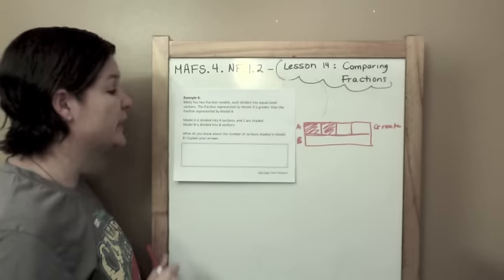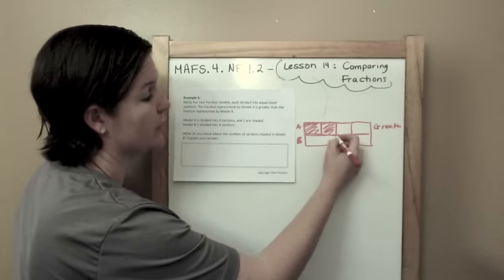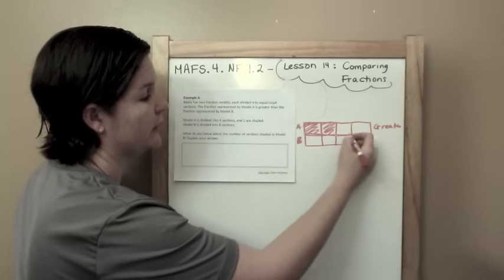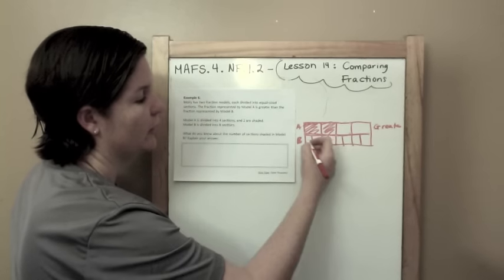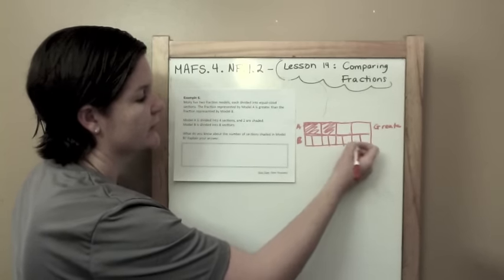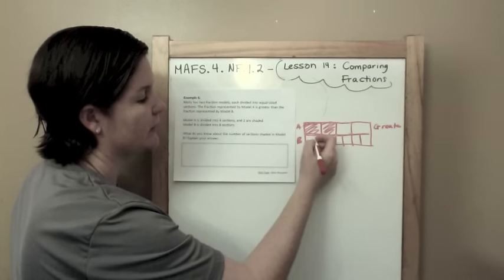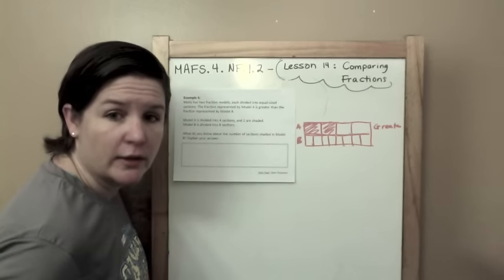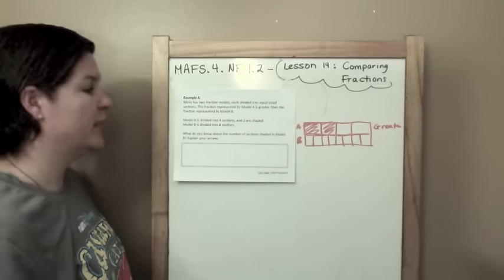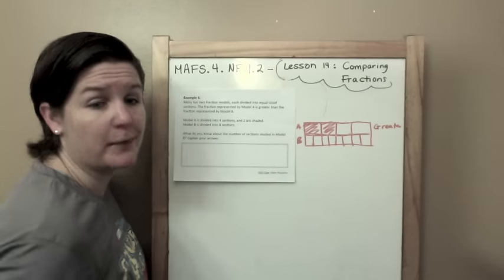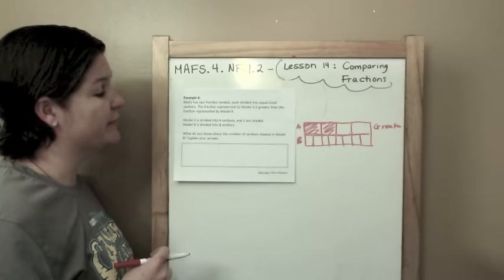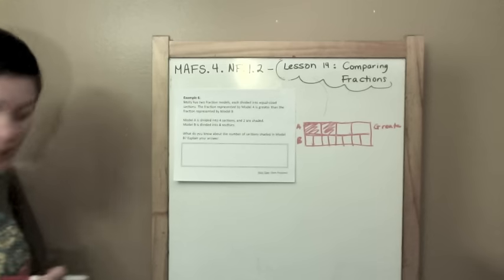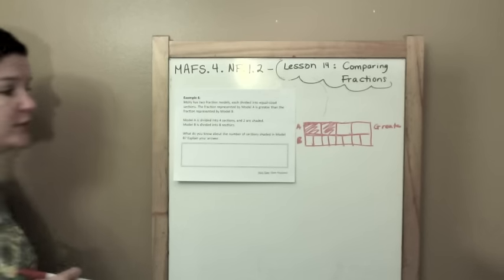Model B is divided into 8 sections. So kind of like our fourths, but each fourth is cut in half to make 1, 2, 3, 4, 5, 6, 7, 8. Let me make this guy a little bit more equivalent. And it doesn't tell us how many are shaded in model B.